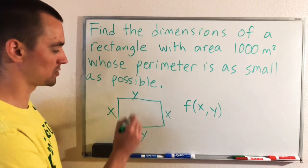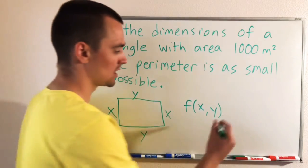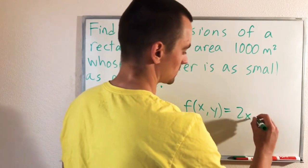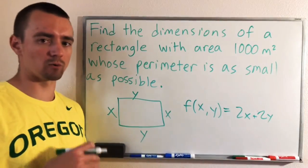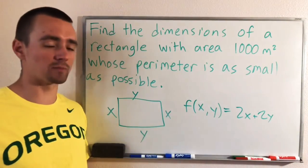So the perimeter of this rectangle is 2X, right? There's two X's and there's two Y's all being added together. So the perimeter is 2X plus 2Y. So this is the thing that we're trying to optimize. We want to make that equation as small as possible.